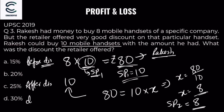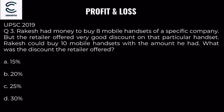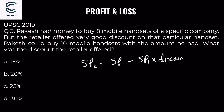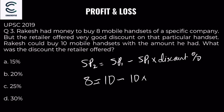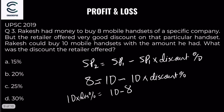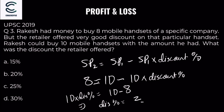Discount = SP1 - SP2 = 10 - 8 = 2. Discount percentage = 2 / 10 × 100 = 20%. So the discount offered was 20%.